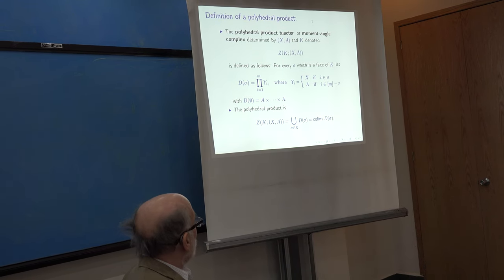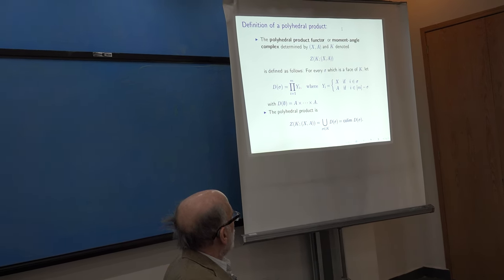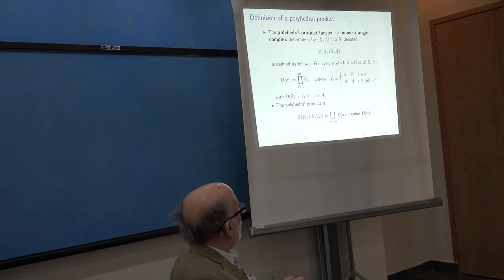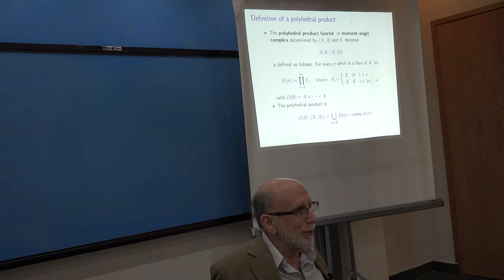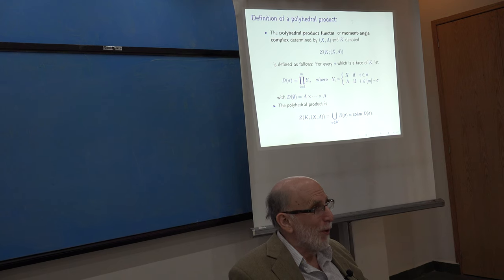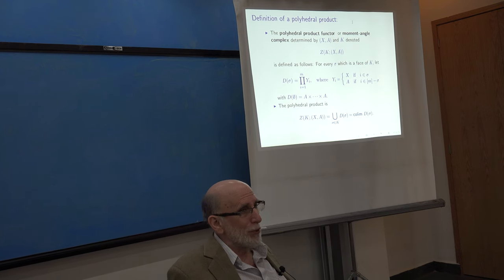So, the definition of ZK is a union of products. Namely, let D sigma be a product of spaces Y sub i, where yi is either x if i is in the face sigma, or yi is equal to a if i is not in sigma. So this gives you a collection of spaces. Again, it's a naive collection of spaces that you might wonder how and why they're interesting.